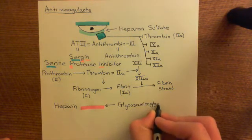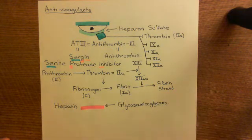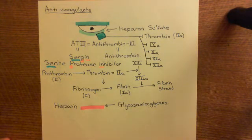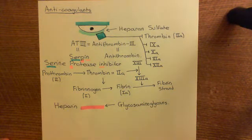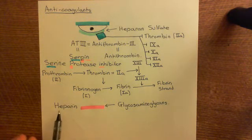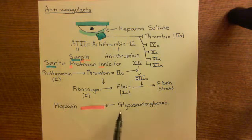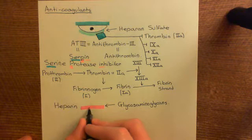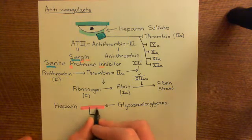If you want to know more about glycosaminoglycan structure, there's an entire video in the playlist on inflammation and angiogenesis covering antithrombin-III, including how heparin differs from heparan sulfate. Basically, heparin is similar to heparan sulfate and can bind to antithrombin-III and activate it.